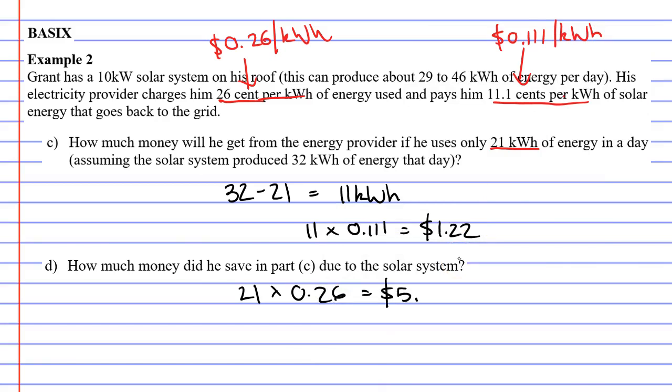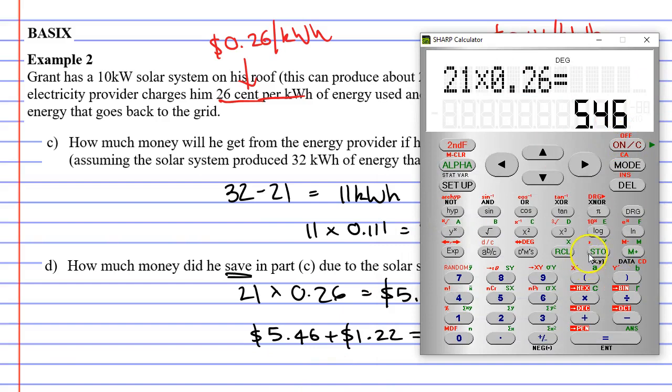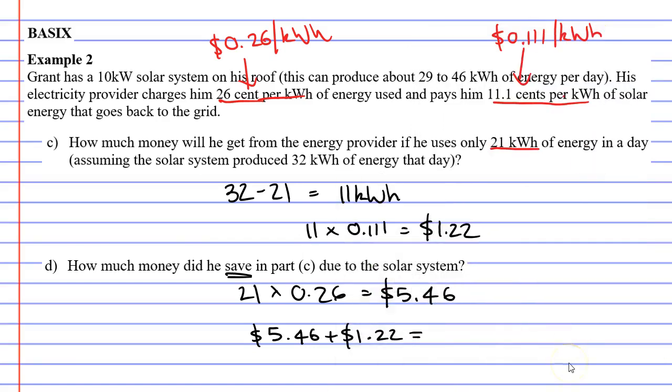So he would have been charged $5.46, but instead of that, he didn't have to pay it at all, and in fact, they gave him some money back. So if we're really going to look at how much money he saved, we need to take the money he would have got charged, that's his savings, as well as add on the extra money he got, the $1.22. So $5.46 plus $1.22 equals $6.68. So he really saved $6.68.